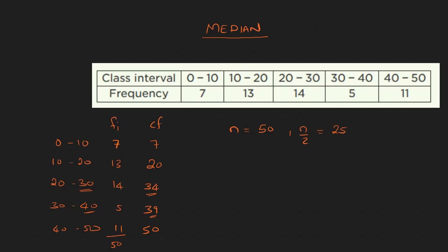We will now identify the median class. We look at the cumulative frequency values and find which class contains the n/2 value of 25. We identify the median class from the cumulative frequency column.